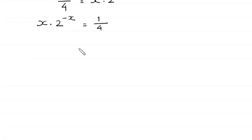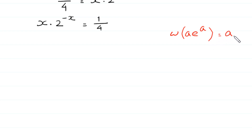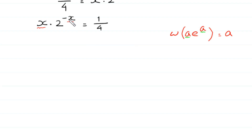Now we want to use the Lambert W function, where W(a times e^a) equals a. To use this function, we must have the same expression in both positions. In the W function we have the same expression a twice. But here we have negative x and positive x — to make them match we need to adjust.